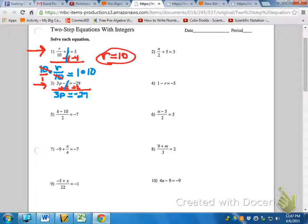3P equals negative 27. What operation does 3P imply? That's multiplication. So it's 3 times P.